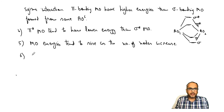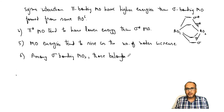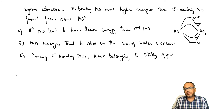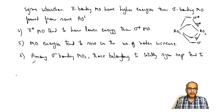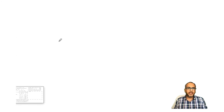Rule 6: among sigma bonding MOs, those belonging to the totally symmetric representation tend to lie lowest in energy. These empirical rules together define the relative energy ordering of molecular orbitals.